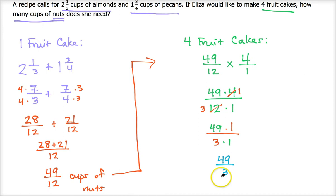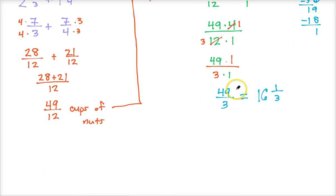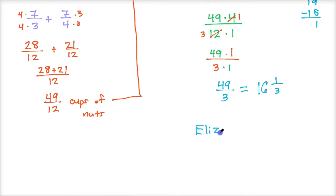This is our answer but we want to make it a mixed number, not leave it as an improper fraction. 49 divided by 3: three goes into 4 one whole time, then three goes into 19 six whole times with a remainder of one. So this is the mixed number 16 and one third. Eliza needs 16 and one third cups of nuts.